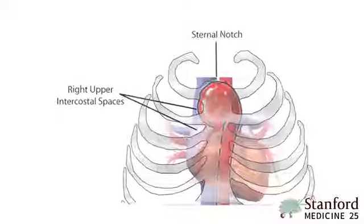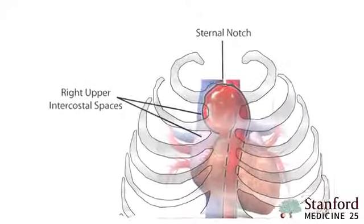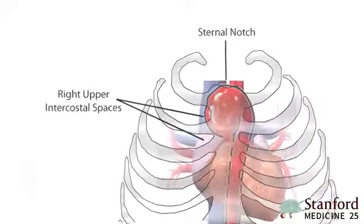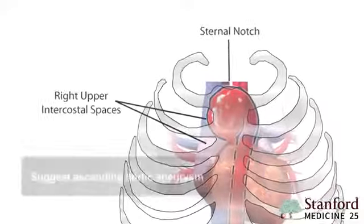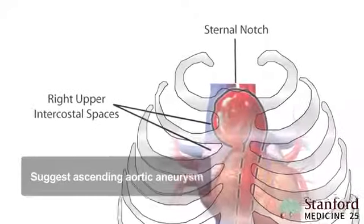Be sure to feel above the sternal notch and also the right intercostal space. If you feel big pulsations there, that might indicate aortic regurgitation caused by an aortic aneurysm.